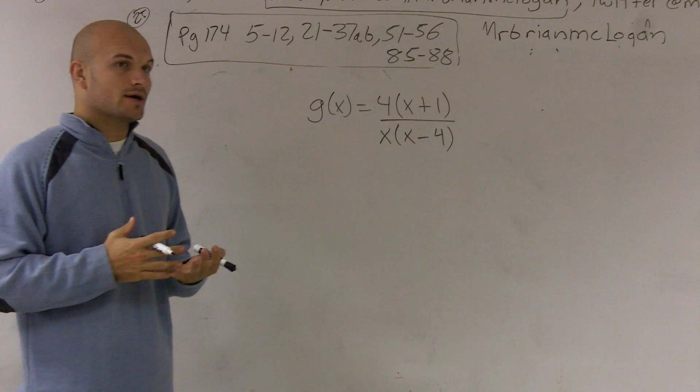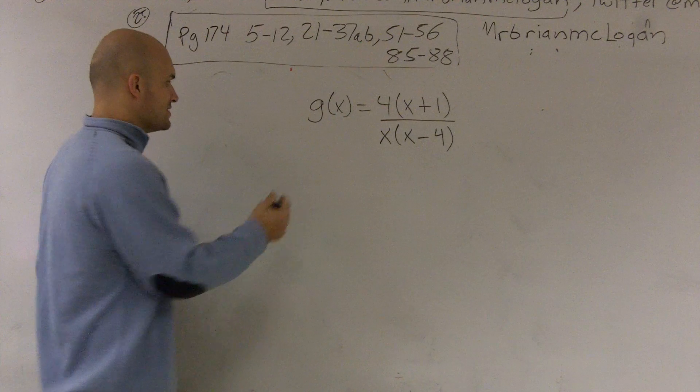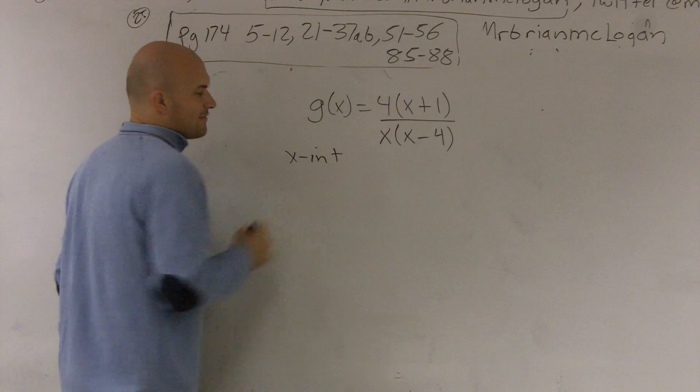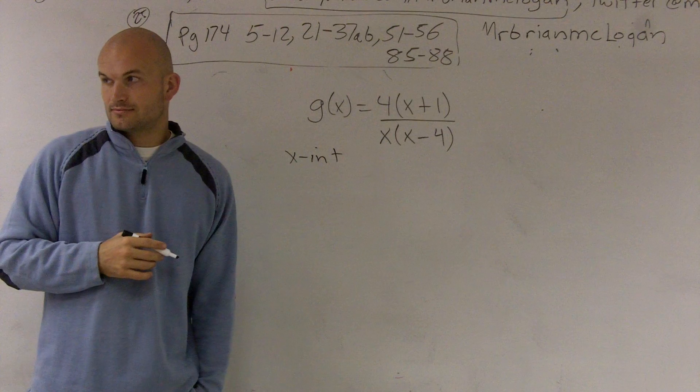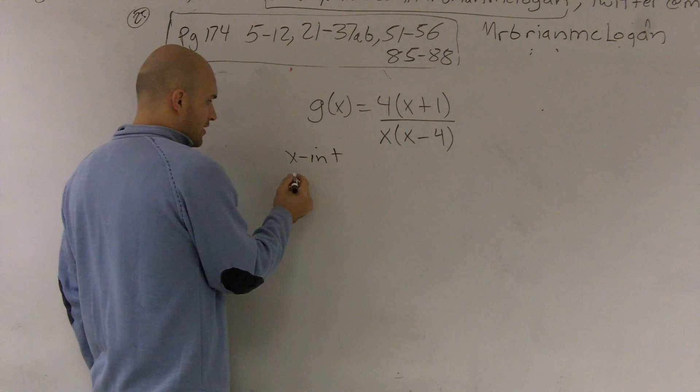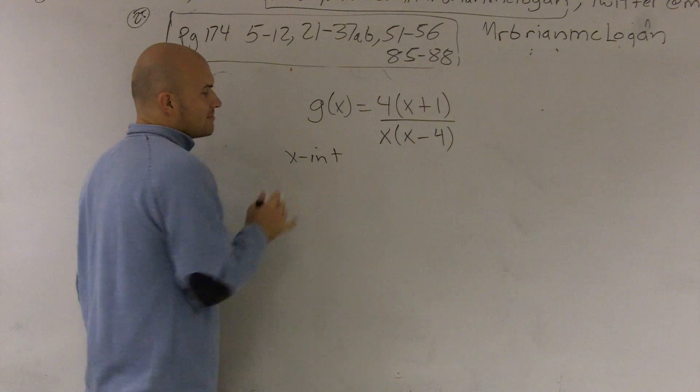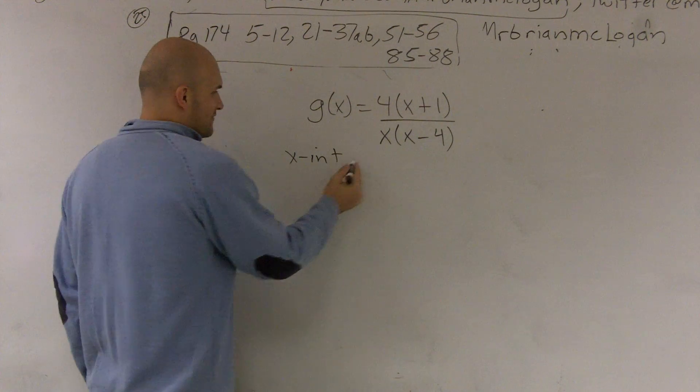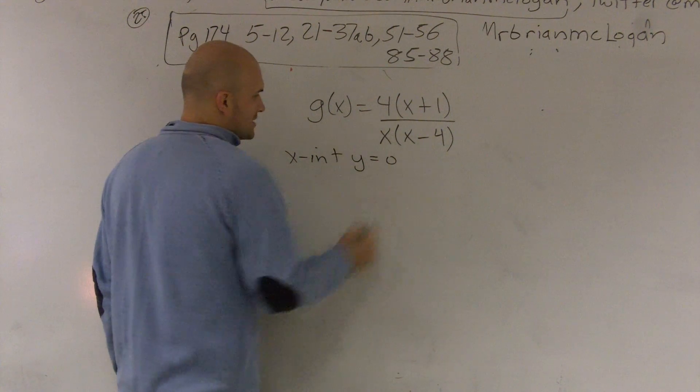So a couple things you need to remember from linear equations is your x-intercepts are when a graph crosses the y-axis, correct? So therefore, our x-intercepts are when it crosses the x-axis. So therefore, y is equal to 0.